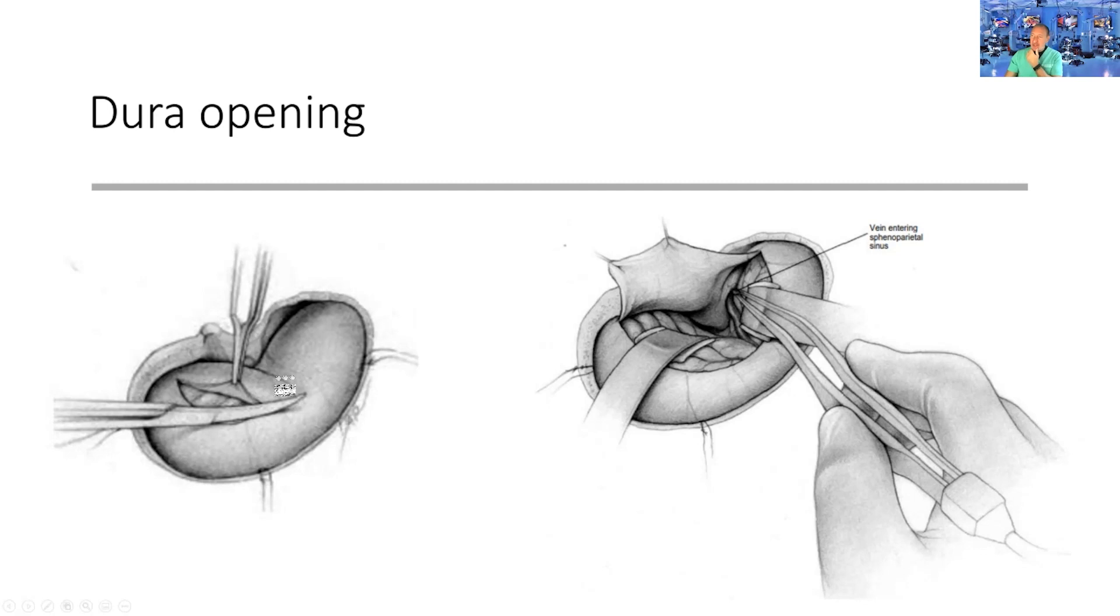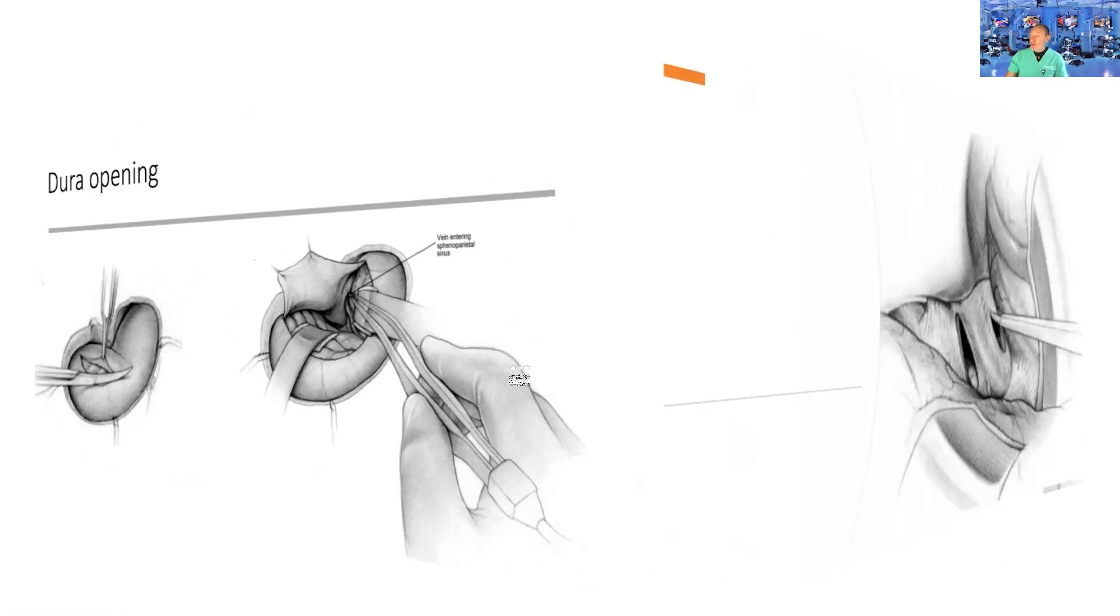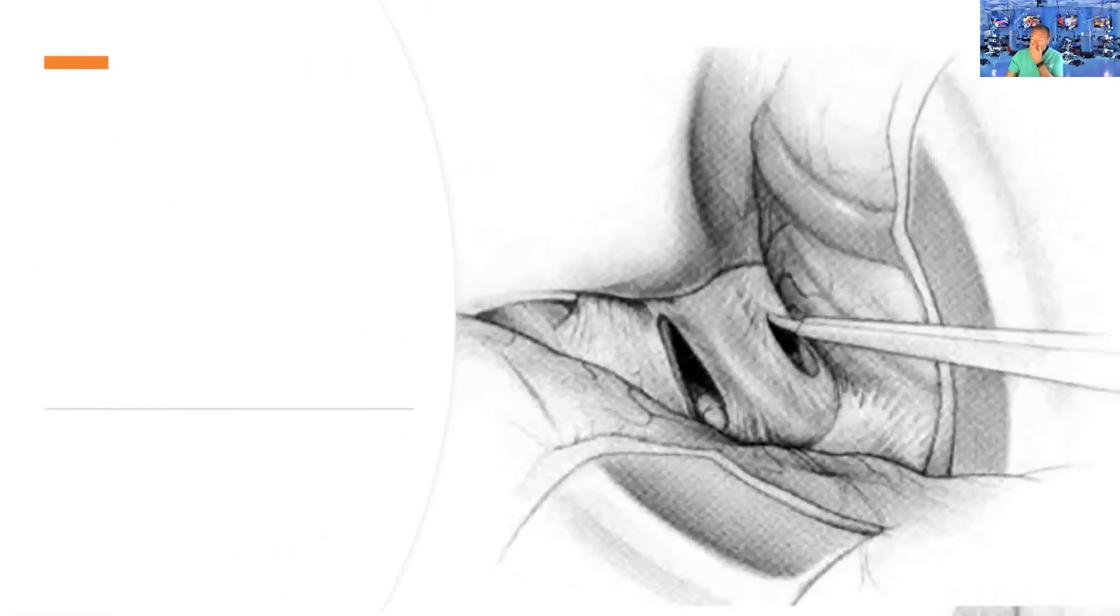The alternative is an L-shaped incision: the first segment along the Sylvian fissure, the second going into the sphenoid wing. This protects the brain and frontal lobe, with the dura still on top. There are advantages and disadvantages to both, depending on what you're trying to achieve.